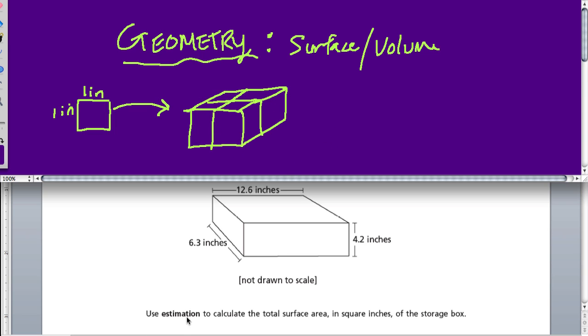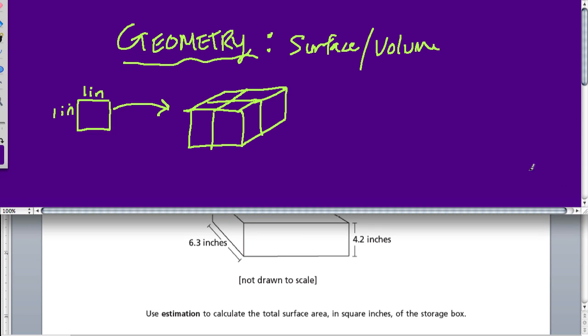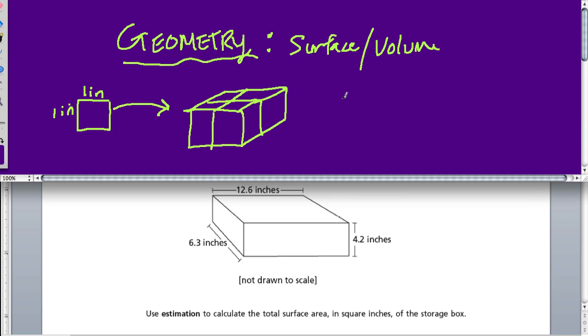We're using estimation, and that could be tricky on the New York State test. It just means that when we estimate, we have to estimate all the numbers we're given from the very start. So we have these numbers, and let's label them. I'm going to choose 12.6 to be the width. I'm going to use 6.3 inches for the depth, and then 4.2 inches for the height.